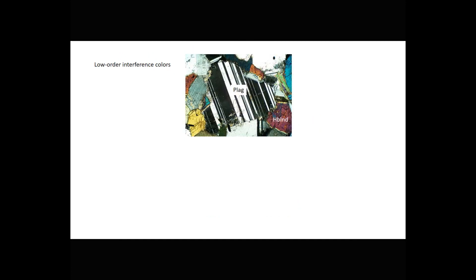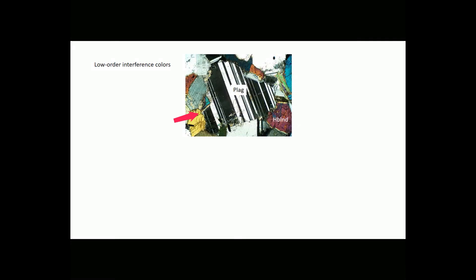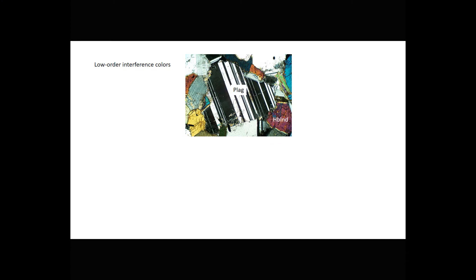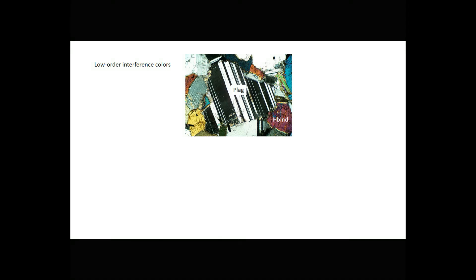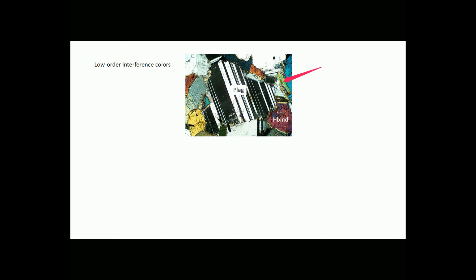Here is another example of interference colors in feldspars. This is plagioclase, showing typical zebra-stripe twinning. The interference colors vary from black to white to gray as you rotate the stage. The thin section also contains hornblende, which shows higher-order, second- or maybe third-order interference colors. And there is one flake of mica which also shows higher-order interference colors.